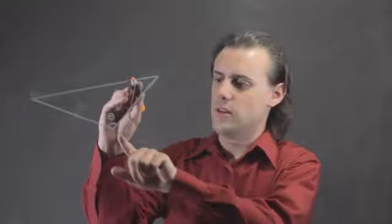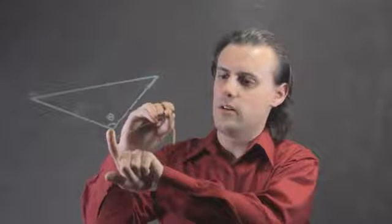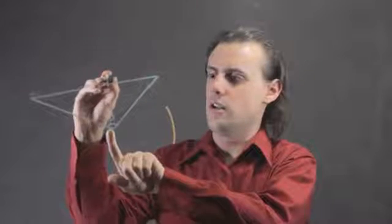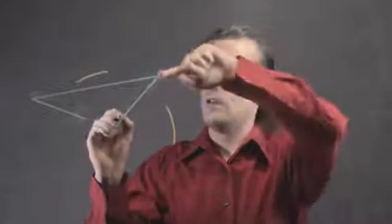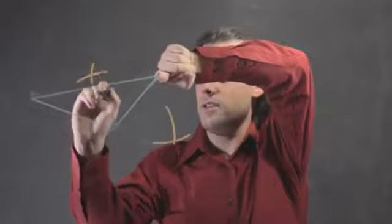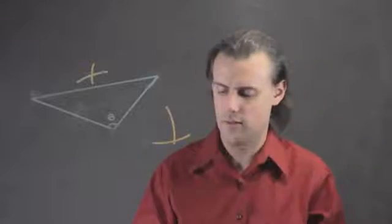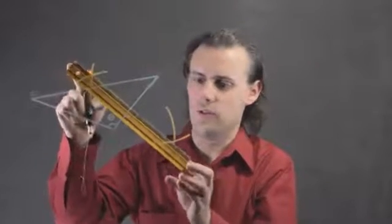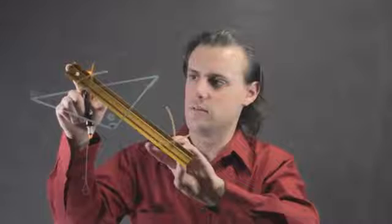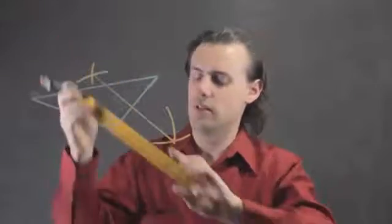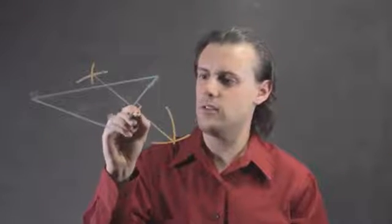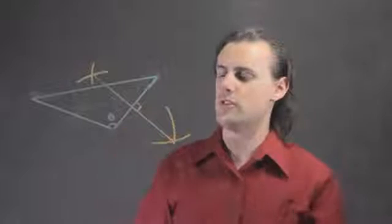To do that we take a point here and draw a part of a circle on either end and we do the same for this point and see where they intersect. Then we connect those points of intersection to form a straight line that is 90 degrees from this edge of the triangle.